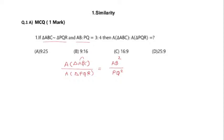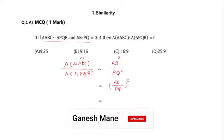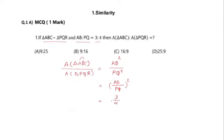Since these two triangles are similar, the ratio of their areas equals the ratio of squares of their corresponding sides. This is AB square divided by PQ square, which equals (AB/PQ) squared. AB to PQ is 3 to 4, so (3/4) squared equals 9 divided by 16. The ratio is 9 is to 16.